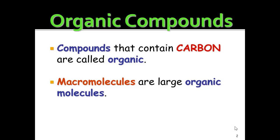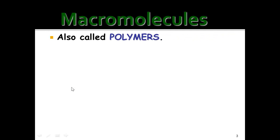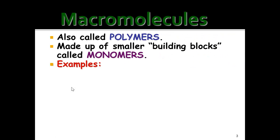Macromolecules are large organic molecules. Macro means big, and molecule — so a large molecule. Another term for macromolecules is polymers. That's a generalized, broad term. Polymers are made up of smaller building blocks called monomers. So monomers make up polymers, and polymers are made of monomers.